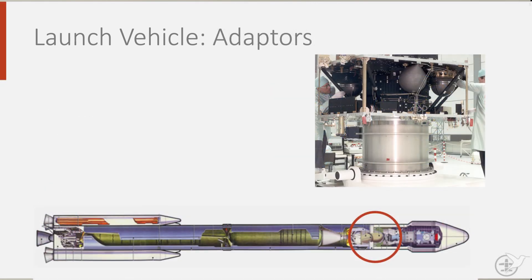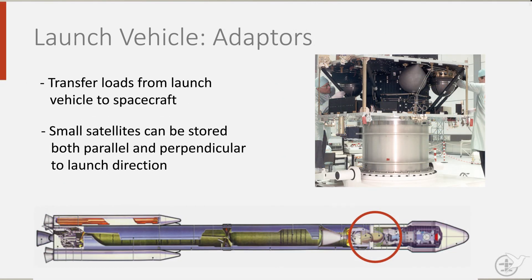Finally, the adapters. They transfer the loads from the launch vehicle to the spacecraft. Here you see the adapter for the European Hipparcos satellite. Space is definitely aviation's biggest brother when it comes to structures. This makes spacecraft and launch vehicle design a complex and challenging enterprise, and has not yet reached its final frontier.